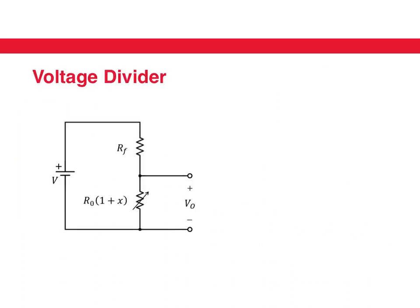Here's a voltage divider. We have taken that strain gauge from the previous slide and put it at this point. And instead of writing R plus ΔR, I have written it as R1 plus X, where X is the fractional change of resistance. The output of this voltage divider, V_output, is going to be R0(1 + X) divided by RF plus R0(1 + X), all multiplied by V.